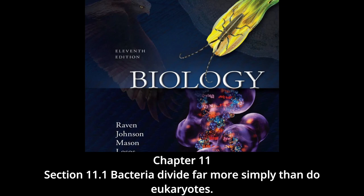A wealth of recent evidence suggests that the two daughter chromosomes are actively partitioned during this process. The cell lays down new plasma membrane and cell wall materials in the zone between the attachment sites of the two daughter genomes. A new plasma membrane grows between the genomes, eventually reaching all the way into the center of the cell, dividing it in two. Because the membrane forms between the two genomes, each new cell is assured of retaining one of the genomes. Finally, a new cell wall forms around the new membrane.